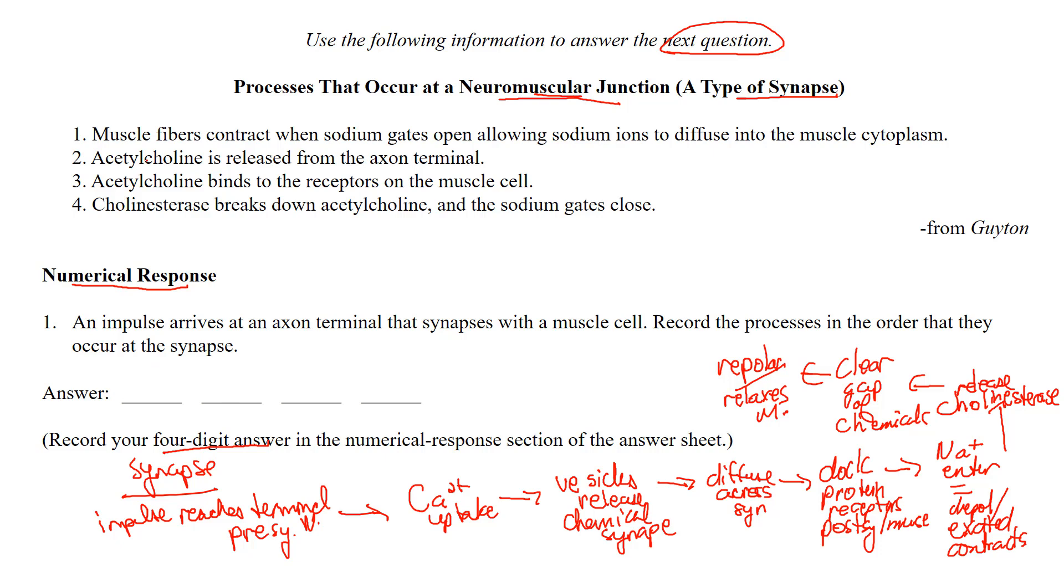Let's take a look at some of these events. Muscle fibers contract when sodium gates open - so they're talking about muscle contraction. That is a little farther down the pathway. Acetylcholine is released from the axon terminals. Well, that would be the chemicals right here. Acetylcholine that's happening pretty far up in this little flowchart here.